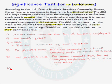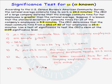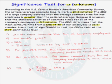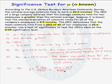The next step is to construct our test statistic. The z-test statistic is given by x-bar minus mu-naught, divided by the population standard deviation divided by the square root of the sample size. Plugging in values: x-bar is 25.6 minutes, mu-naught is 24.3, the population standard deviation is 5.5 minutes, and the sample size is 40. When you compute this, you get a test statistic of 1.49.